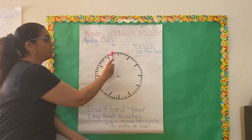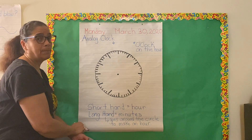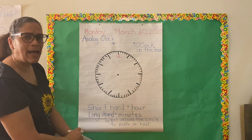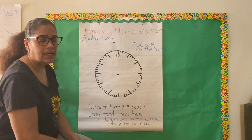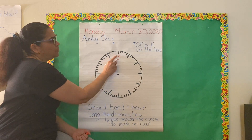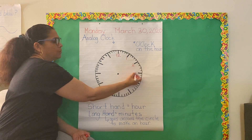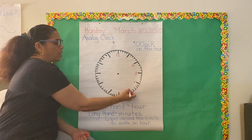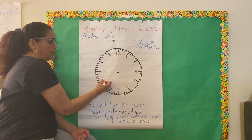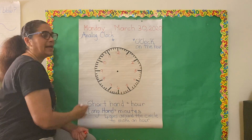The analog clock is a circle, and we measure the hours by numbers. We start here with number 12 — number 12 indicates o'clock, meaning it is starting a new hour. As we proceed around the analog clock we have: one, two, three, four, five, six, seven, eight, nine, ten, eleven, and twelve.